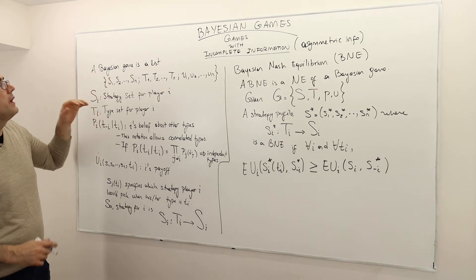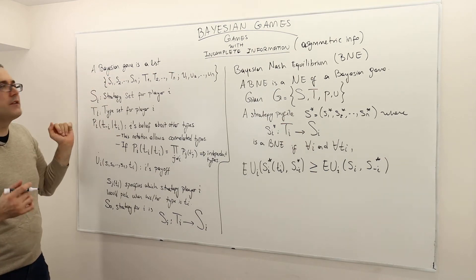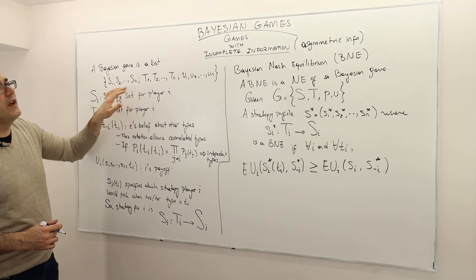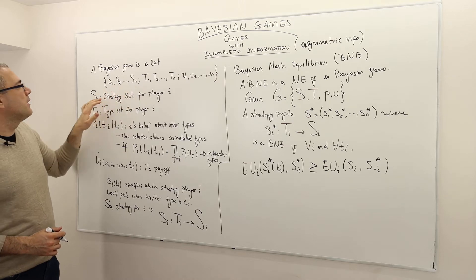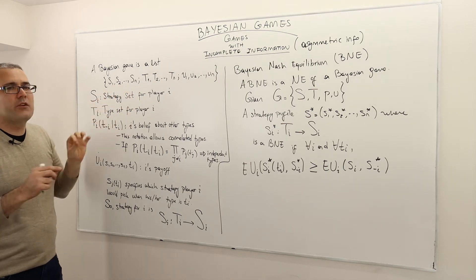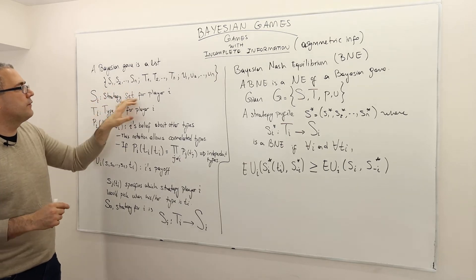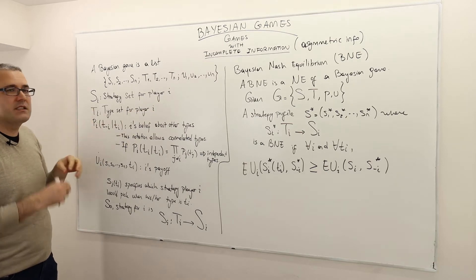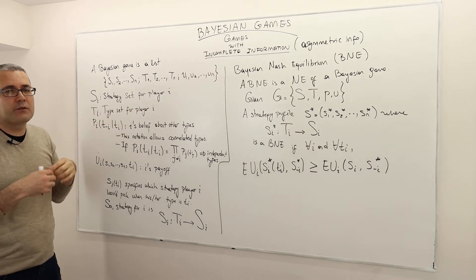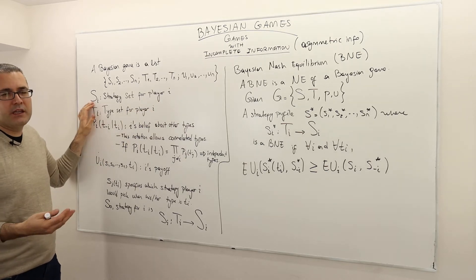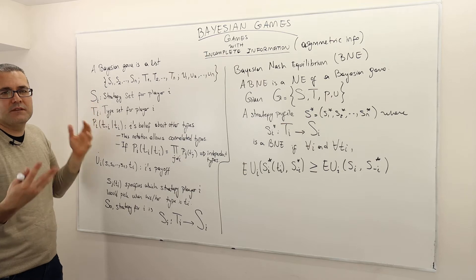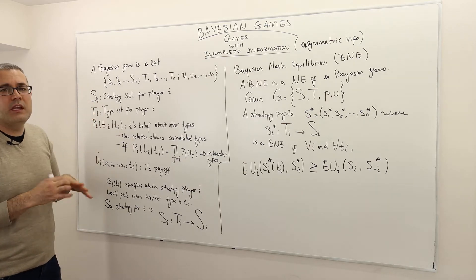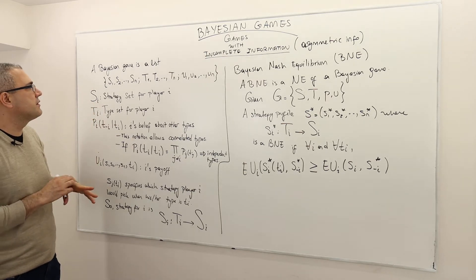A Bayesian game is a list S1, S2, up to Sn. Each Si is basically a set of strategies for player I. If each player has a discrete or finite strategy, then Si is a finite strategy set, or it can be an infinite strategy set.